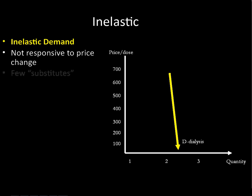Here are the things that are going to cause inelastic demand. First, if a good doesn't have very many substitutes. Like dialysis here — there's kidney transplant or dialysis, that's it. Things like deodorant don't have very many substitutes either. So this is the biggest thing that's going to cause inelastic demand.